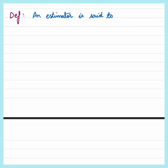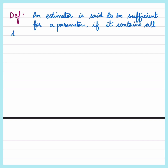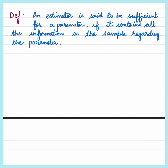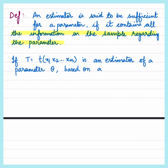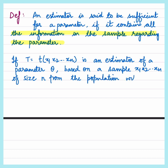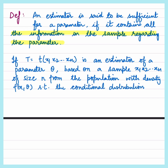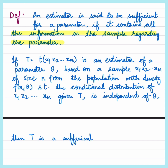An estimator is said to be sufficient for a parameter if it contains all the information in the sample regarding that parameter. More formally, if T is an estimator of a parameter theta based on a sample x1, x2, ..., xn of size n from a population with density f(x; theta), such that the conditional distribution of X given T does not depend on theta, then T is a sufficient statistic.